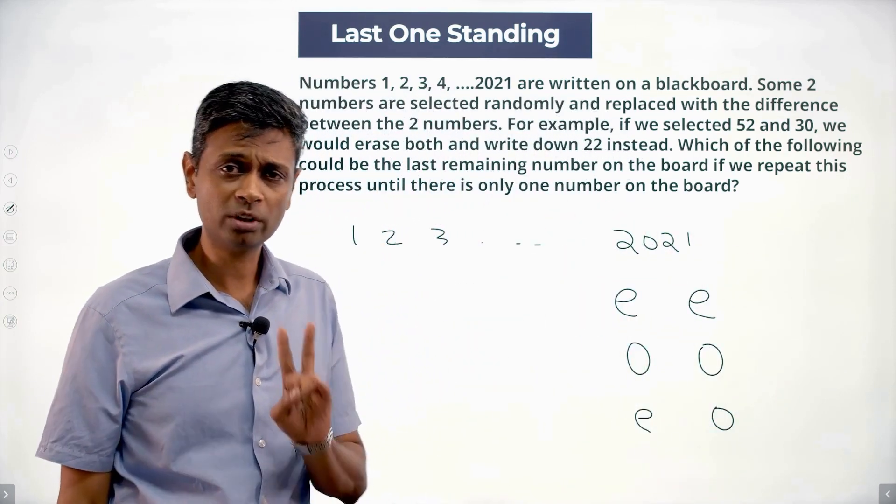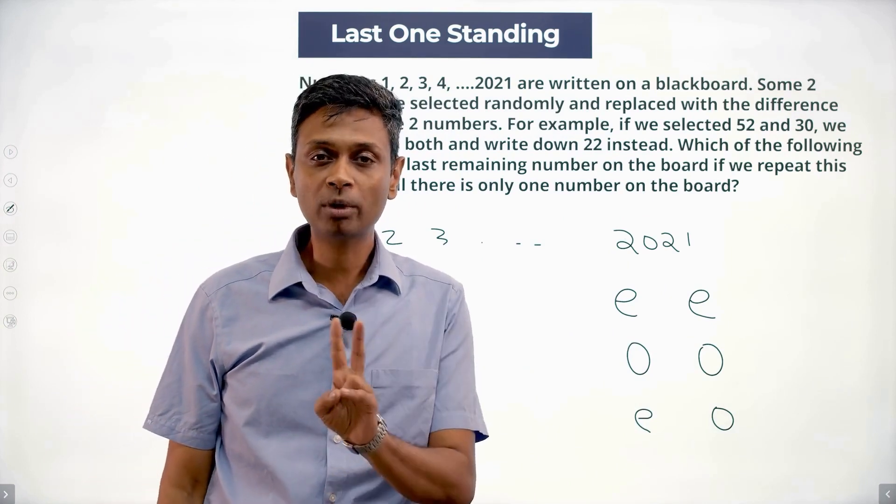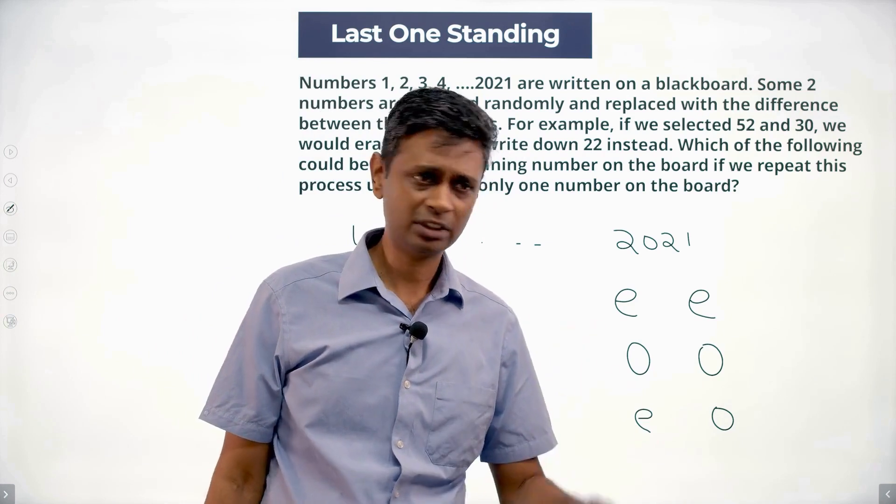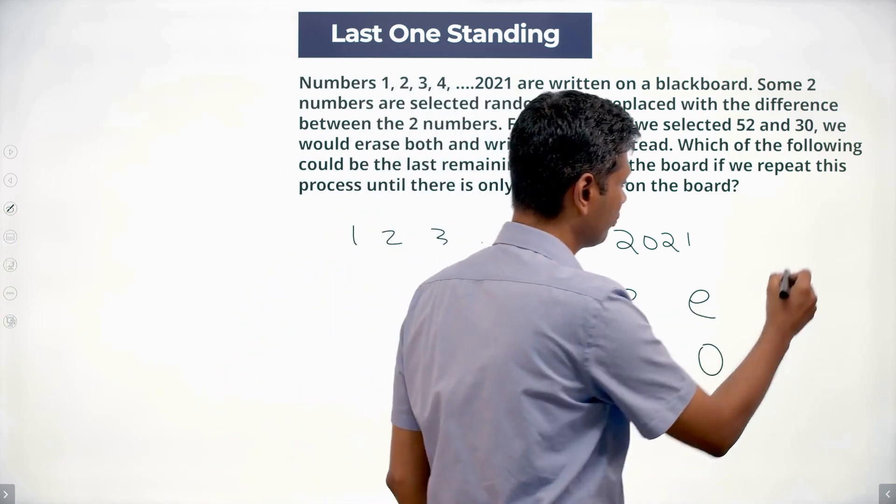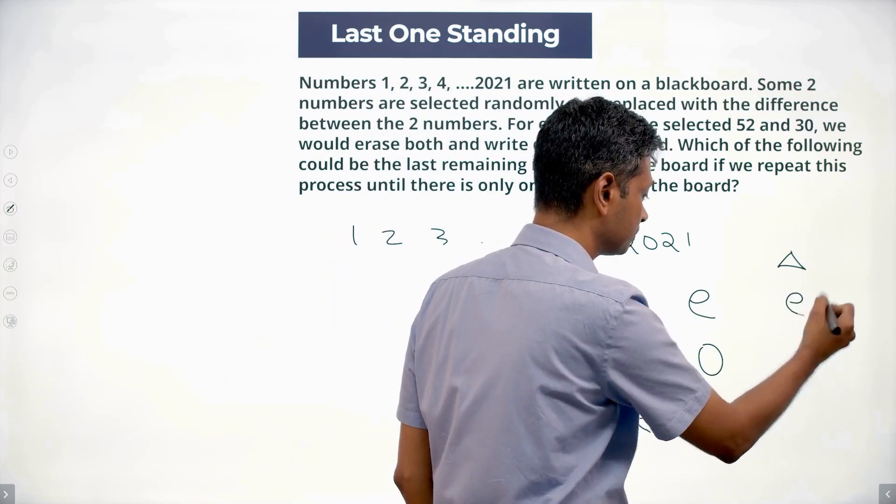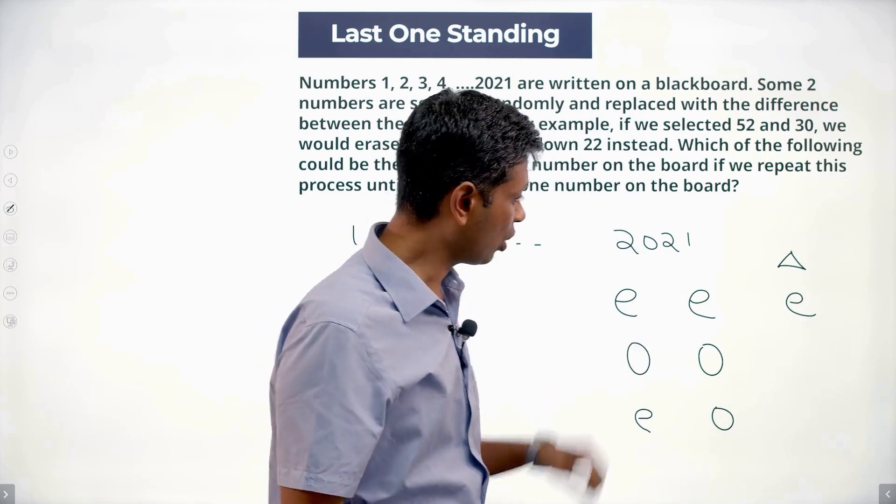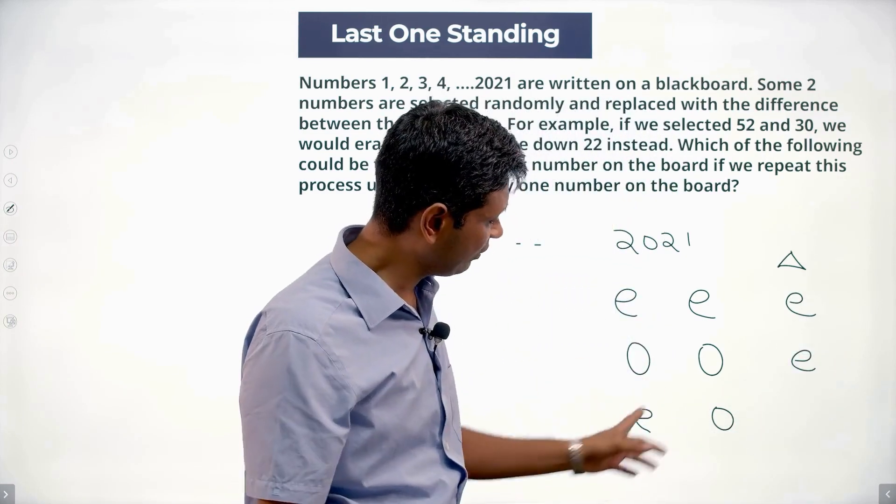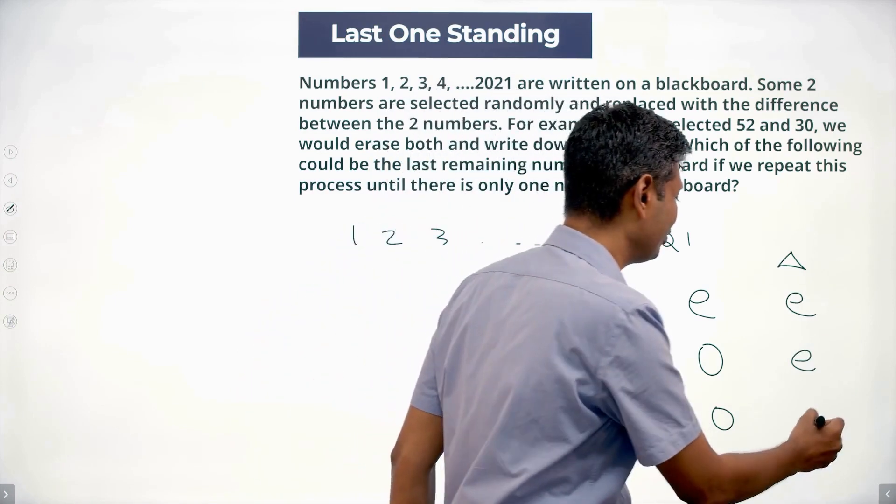Nice! Both numbers could be even, both numbers could be odd. There could be one even number, one odd number. If both are even, the difference between these two is even. If both are odd, the difference between the two is even. There's one even and one odd, the difference is odd.